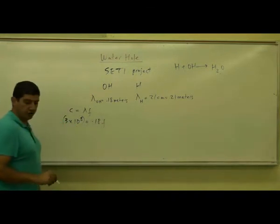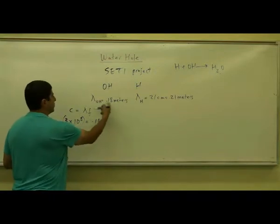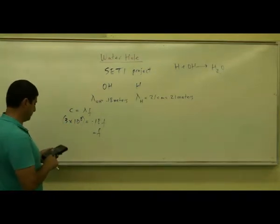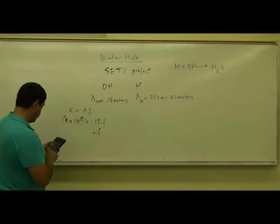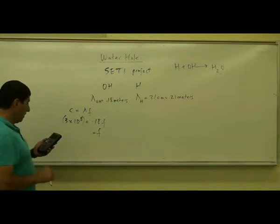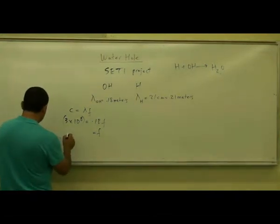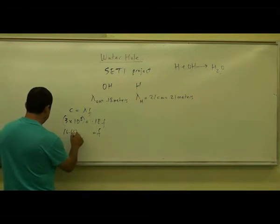So we calculate F. What's the frequency of the hydrogen peroxide absorption line? So we have 3 divided by 0.18 times 10 to the power 8. So we have basically, it's going to be 16.667 times 10 to the 8.